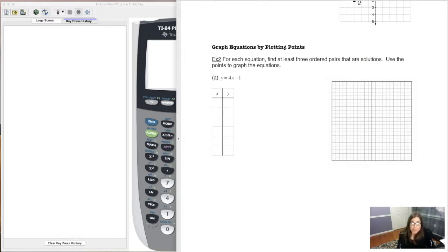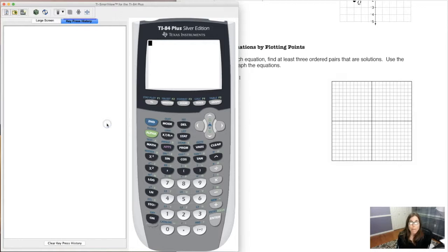We graphed the line, slope was 4, y-intercept 0, negative 1. So let me show you how you can do that on your TI-84. Same thing works if you have a TI-83. So when you go to your graph mode, or when you have your graphing calculator, turn it on.